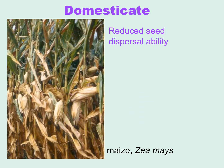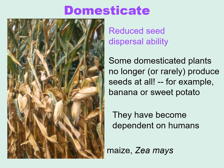Domesticates often have some kind of reduced seed dispersal ability. For example, the ears of maize are covered in a husk, and although if this fell to the ground you could get a clump of maize, it would not be very successful. Some domesticated plants no longer or rarely produce seeds at all — for example, bananas and sweet potatoes. These plants have become dependent on humans.